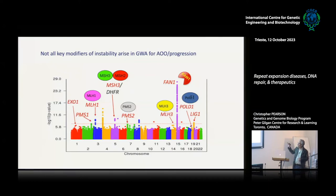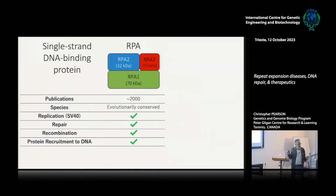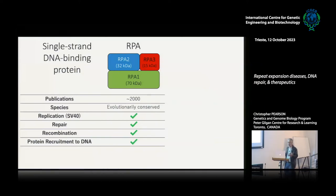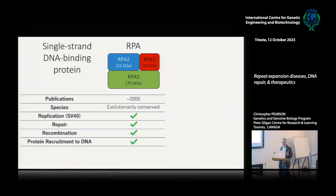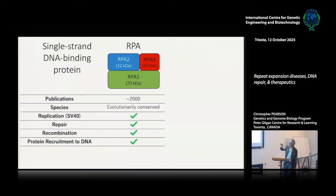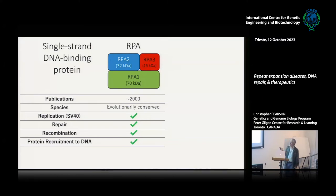We hypothesized many of these modifiers before GWAS was done through a candidate approach. Any time you have DNA transcription, replication, recombination, or repair, you will have single-stranded DNA, and you need proteins that stabilize it. So we thought looking at RPA, the major single-stranded DNA binding protein, would be important. RPA is composed of three subunits — RPA1, RPA2, and RPA3 — is evolutionarily conserved, and is involved in DNA replication and repair: wherever single-stranded DNA occurs, RPA is there.